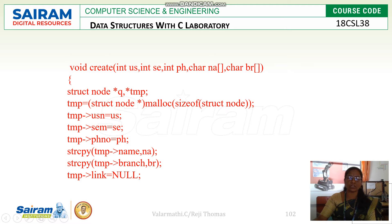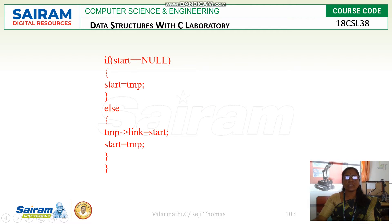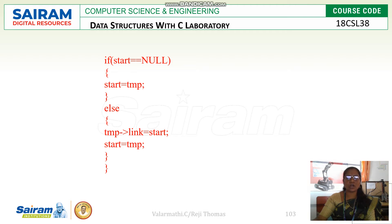At last, the link for that temporary node should be made null, because until it is connected to the next node it should be null. Then we check whether we are creating the first node. If start equals null, it means this is the first node of the singly linked list. At that time, we assign start equal to temp, meaning the temporary node is the first node.